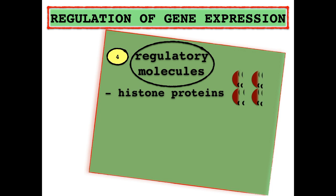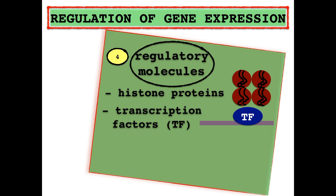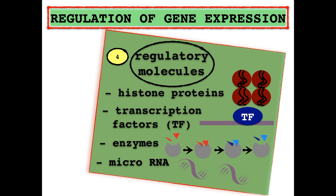The histone proteins that pack the DNA molecule into chromosomes in eukaryotes can undergo chemical modifications that result in making the DNA more loose or more compact. This modulates gene expression, more particularly the transcription of DNA into RNA. There are other proteins called transcription factors that directly bind to the DNA molecule, controlling the rate of gene transcription into RNA. Some enzymes can also regulate gene expression through chemical modifications of the DNA, RNA, or the produced protein. MicroRNA is a short RNA molecule that can hinder gene expression by specifically binding to the RNA transcript.